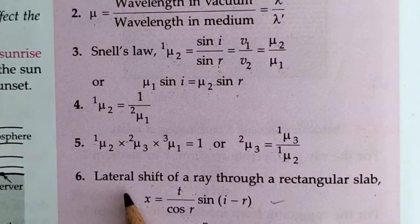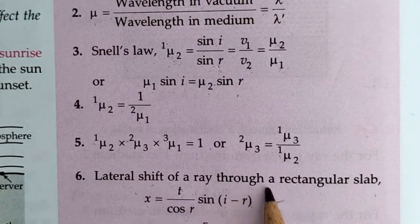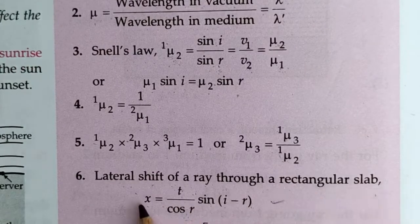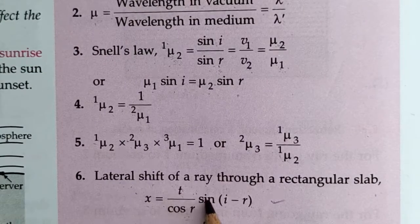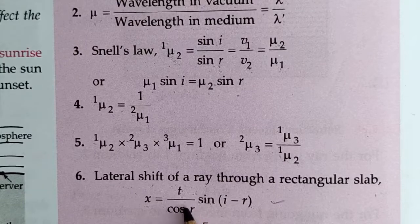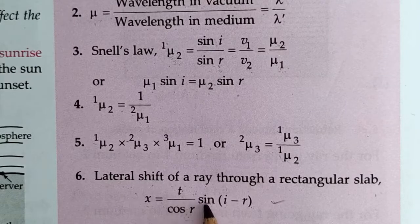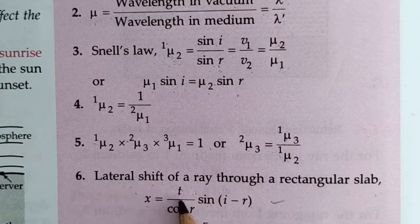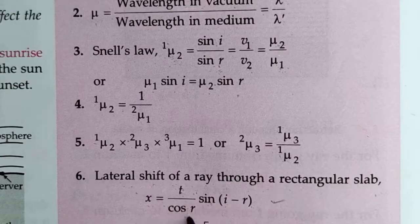The sixth formula: lateral shift of a ray through a rectangular slab. Lateral shift x equals t multiplied by sin(i minus r) divided by cos r. You can remember lateral shift as t sin(i minus r) divided by cos r.